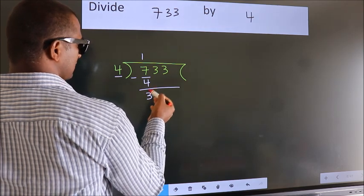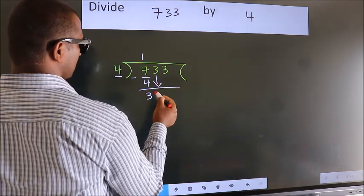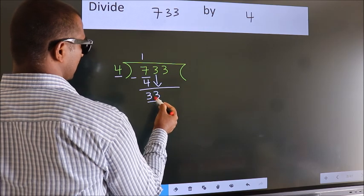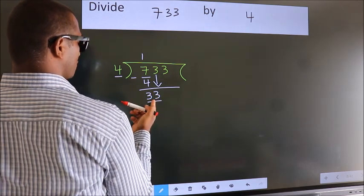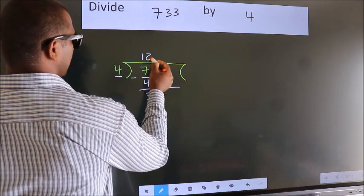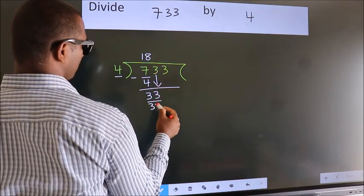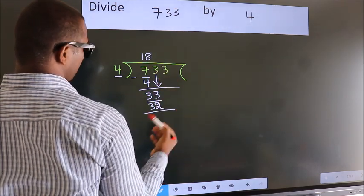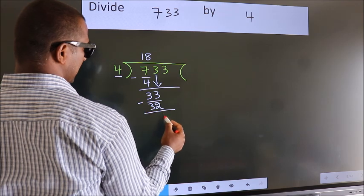After this, bring down the next number. So, 3 down, making 33. A number close to 33 in the 4 table is 4 times 8 is 32. Now we subtract. We get 1.